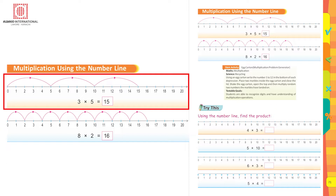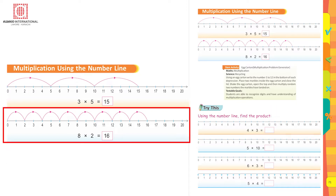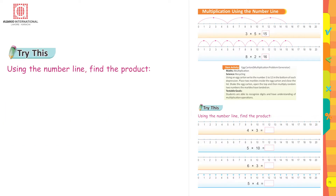The third step goes till 15. Another example: 8 multiplied by 2. Here you have to take eight steps, counting from 0. The first step goes till 2, from 2 to 4, 4 to 6, and you go on till 16. So 8 multiplied by 2 equals 16.